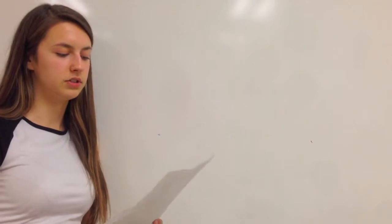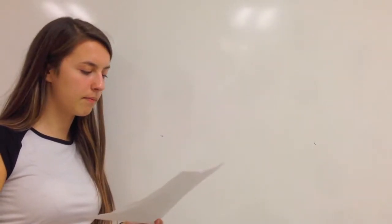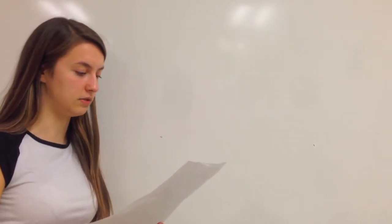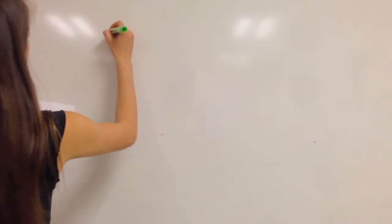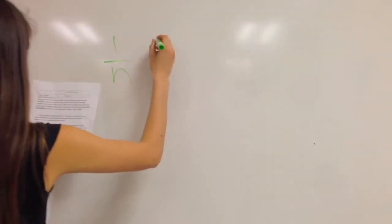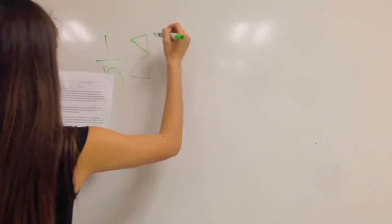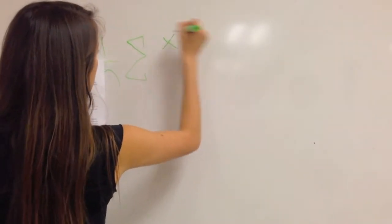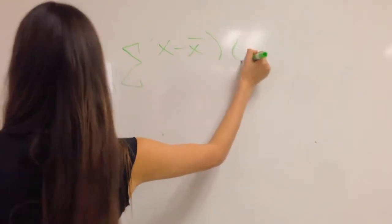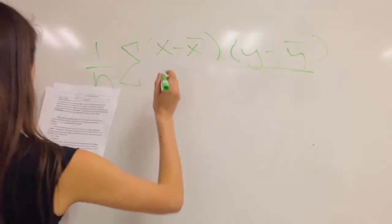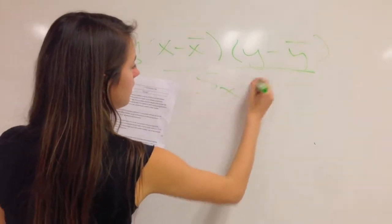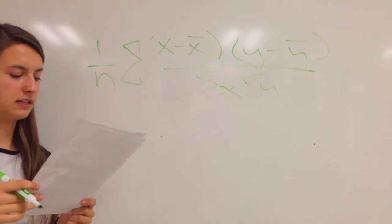The correlation coefficient in this project tells us both the strength of the data between the sets of data as well as the direction the data goes in. To find the correlation coefficient, I'm going to use the equation 1 over n, which is the amount of data points I have, sigma x minus x-bar times y minus y-bar divided by...